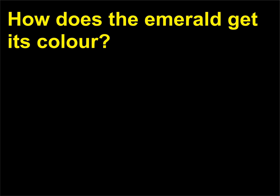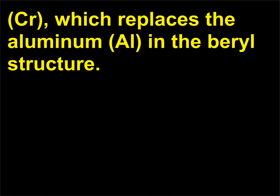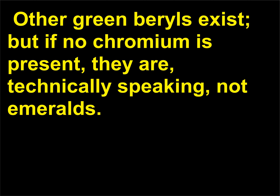How does the emerald get its color? Emerald is a variety of green beryl (Be3Al2Si6O18) that is colored by a trace of chromium (Cr), which replaces the aluminum (Al) in the beryl structure. Other green beryls exist, but if no chromium is present, they are, technically speaking, not emeralds.